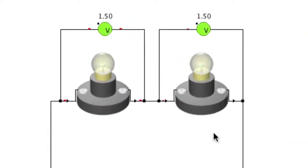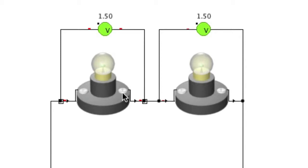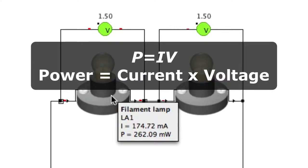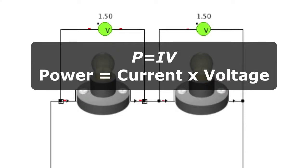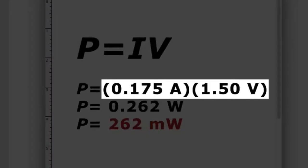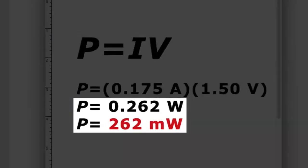If we look carefully we can see that the power used by each bulb is 262 milliwatts. Power can be calculated with the formula P = IV, that is power is equal to current times voltage. Multiplying the current of 0.175 amps by the voltage of 1.5 volts confirms the power of a bulb in this circuit is 0.262 watts or 262 milliwatts.